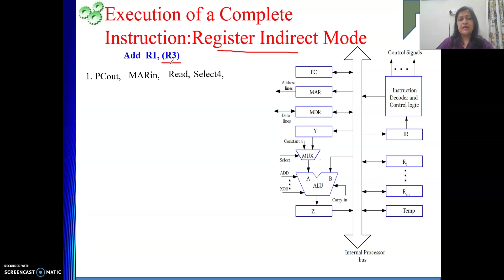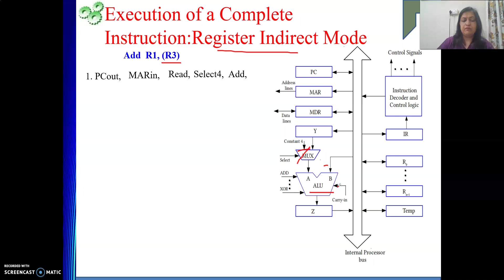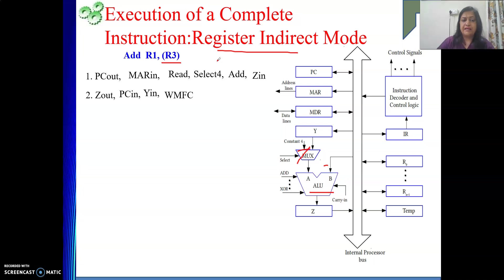Why increment by 4? Because our assumption is the instruction length is one word, that is 4 bytes, and the machine is byte addressable. So we select 4 from the multiplexer. The ALU performs PC plus 4 — these two contents are added. The result cannot be placed directly on the bus, so it goes to Z register (Z in), and from Z it is given to PC. We also store it in Y register — the reason I will explain shortly. Then WMFC.